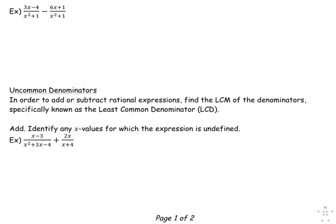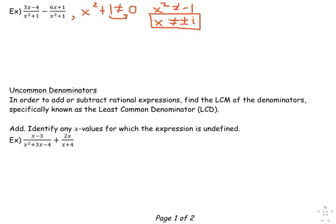In the next example, I begin like before, preventing division by zero by setting the denominator equal to zero, or different than zero. Notice that I can't factor x squared plus 1 — it is not a difference of squares. So I need to use the square root property and take the positive and negative square root of both sides. The square root of negative 1 is defined as i, so I'll box that as part of my answer.